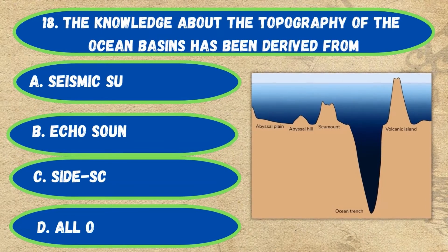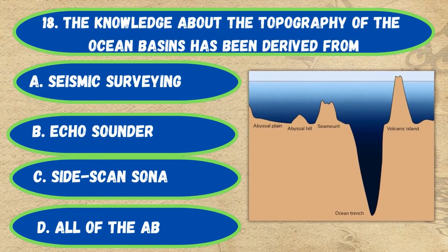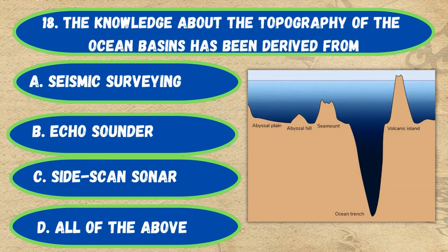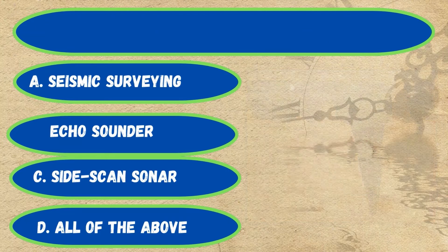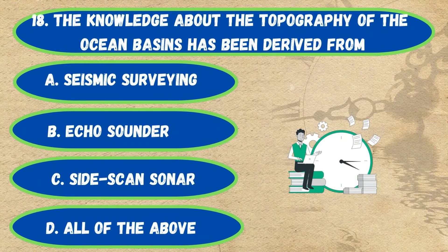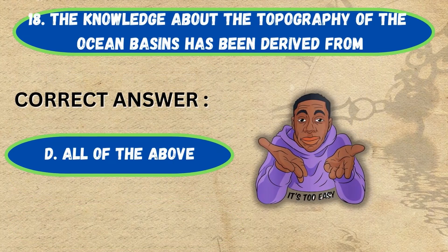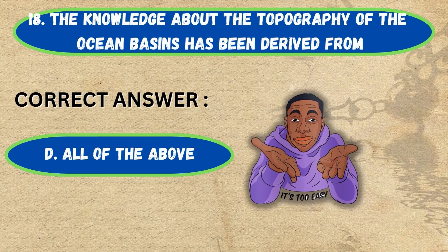Question number 18. The knowledge about topography of the ocean basin has been derived from: option A, seismic surveying; B, ecosounder; C, side-scan sonar; D, all of the above. The correct answer is option D, all of the above.